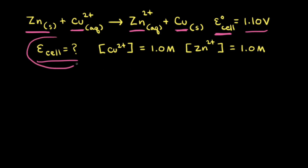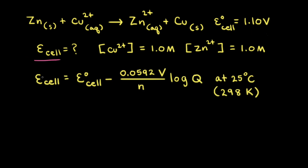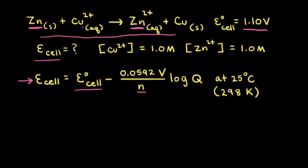Our goal is to find the cell potential at the moment when the concentration of copper²⁺ ions equals 1.0 molar and the concentration of zinc²⁺ ions is also 1.0 molar. Using the simplified Nernst equation, E naught of the cell is positive 1.10 volts. For N, the number of electrons transferred: zinc going to zinc²⁺ is a loss of two electrons, and copper²⁺ going to solid copper is a gain of two electrons, so N equals 2.